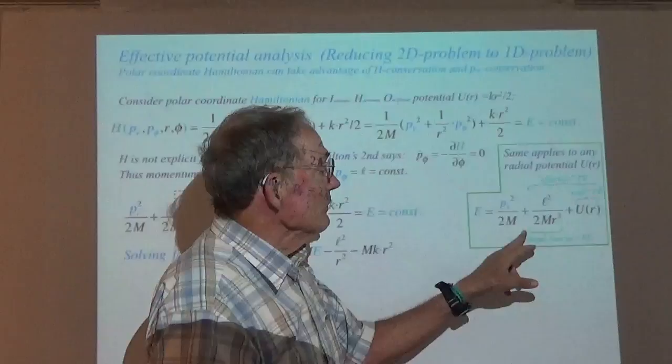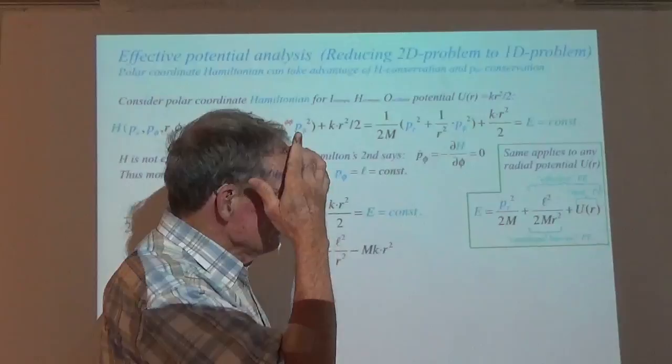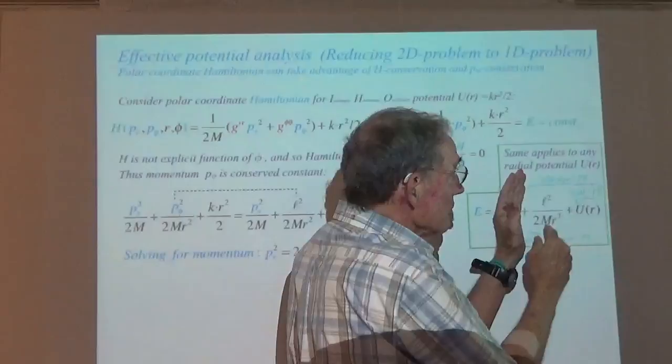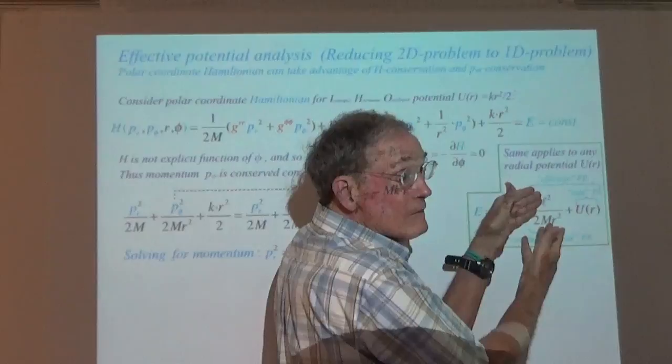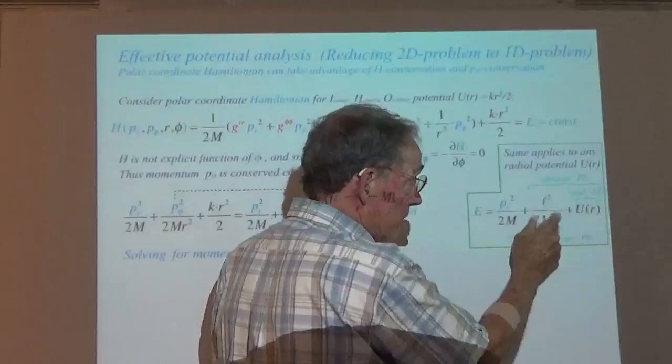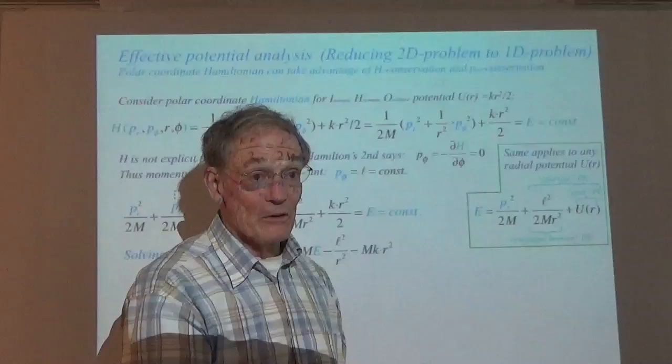What the effective potential is telling you is: if you get close to the origin, R becomes small, which makes P_phi-squared over M R-squared blow up. Then U will do whatever it does in addition to that one. That one's got a singularity at R equals zero — you cannot go to R equals zero without getting infinite energy. So that's what we'll see when we do the animations, particularly for the Coulomb case.